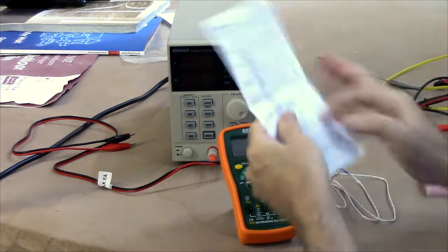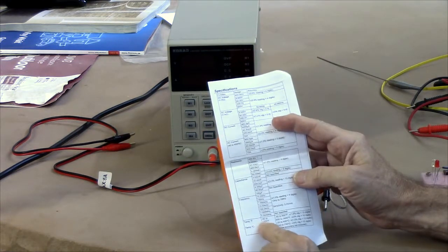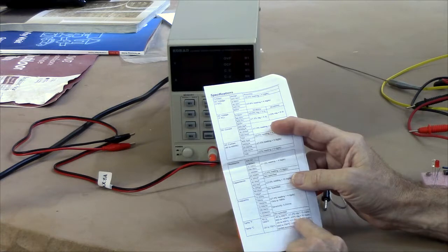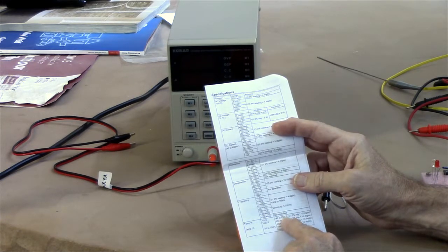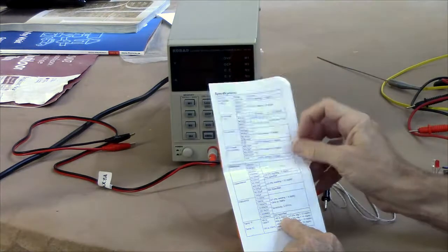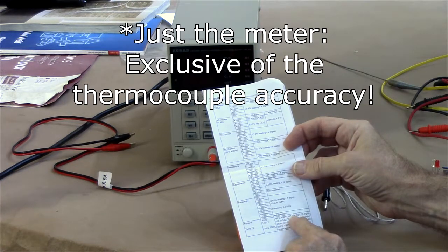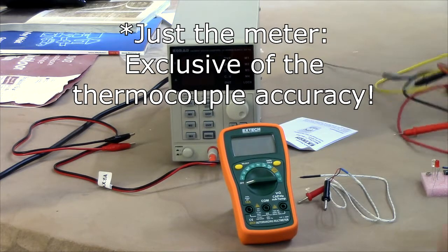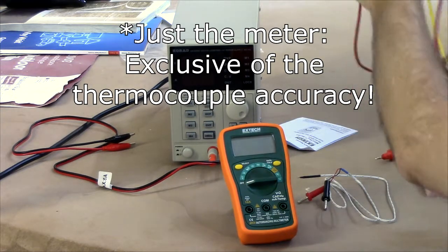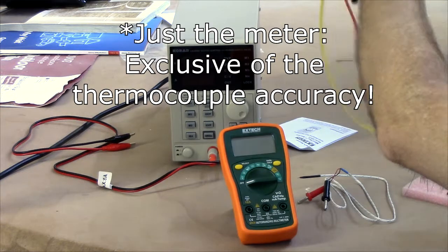I should point out, here are the specs for it. Temperature. Let's see. From minus 40. This is a type K thermocouple is what it's using. 1% plus 10 digits. So that's not very useful at things like room temperature, is it?